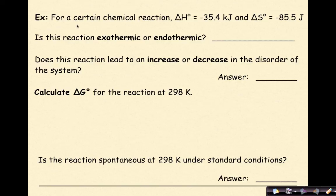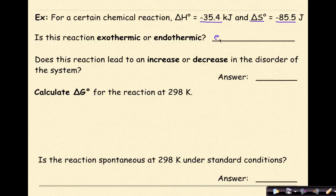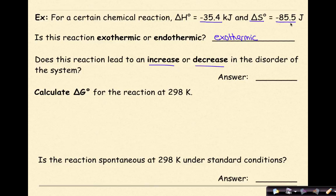Let's look at another example. For a certain chemical reaction, our delta H under standard conditions is negative 35.4 kilojoules, and our delta S at standard state is negative 85.5 joules. Is the reaction exothermic or endothermic? We look at our delta H, we see the negative sign — that is exothermic. Does this reaction lead to an increase or decrease in the disorder of the system? Our delta S is negative, so a negative delta S means we are going to have a decrease in the disorder of the system.